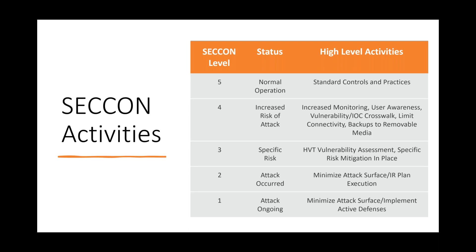With each SECCON level, you'll have defined activities and everyone knows what they need to do at each level — everyone is trained accordingly. The point is you can pre-stage what you want to do as you move through these levels. For example, moving from five to four during a known phishing campaign, you might notify all users to take extra caution when clicking links, require manager approval before clicking any link, run backups, or verify that assets are patched correctly.